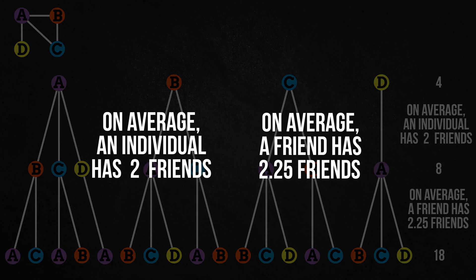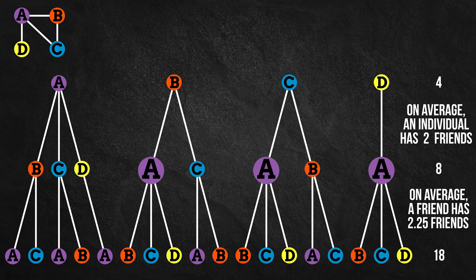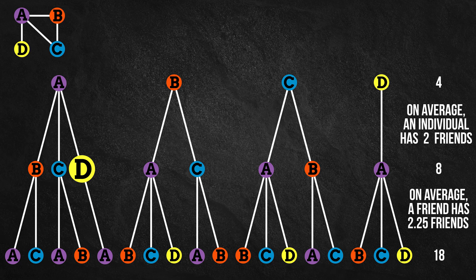On average, an individual has fewer friends than his friends do, and it is that way because the popular individuals are overrepresented in the latter calculation. In other words, popular Alice shows up in each of the others' friendship networks and can make them all feel relatively deprived, while unpopular Dan shows up only in Alice's friendship network. It's a form of sampling bias, in which people with more friends are more likely to be in an individual's friend group.